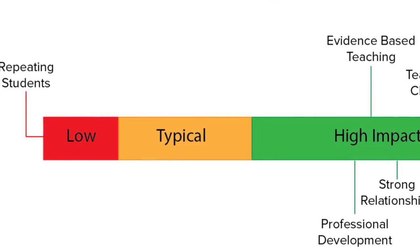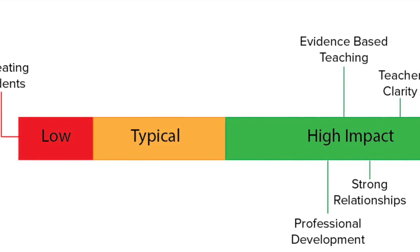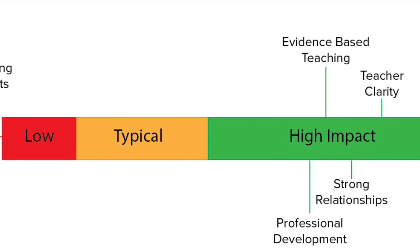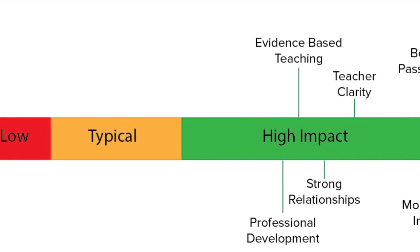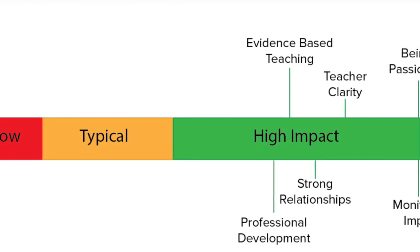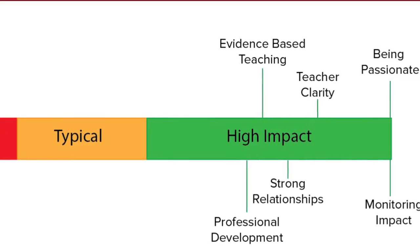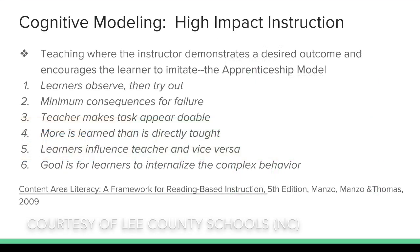In his synthesis of over 500,000 educational research studies related to student achievement, John Hattie identified what he called high-impact strategies. Many of these refute the effectiveness of many popular approaches, but one high-impact element of teaching is cognitive modeling of comprehension skills.